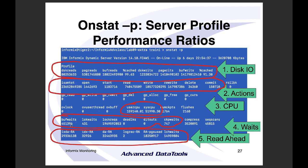Buff waits means a user had to wait on a buffer — usually means you don't have enough LRUQs. You'll always see some waits, but less is better. Lock waits means a user had to wait on a lock — a good ratio is lock waits to lock requests; if it's less than 10%, I don't worry; greater than 10% is concerning.